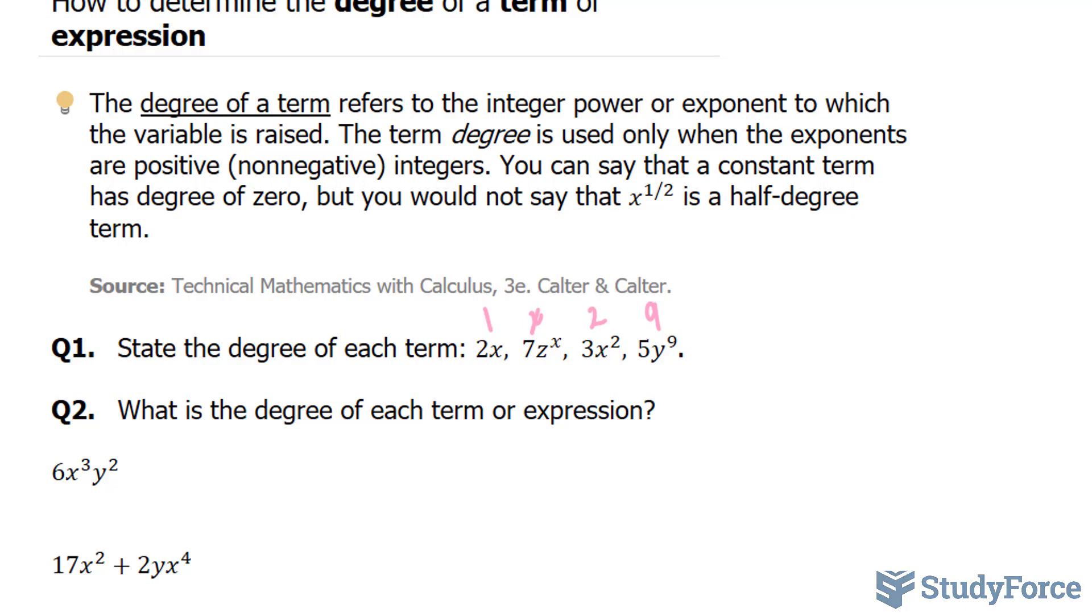To figure this one out, you have to add the degrees. So we have 3 here and we have 2 here. 3 plus 2 is 5. This is a fifth degree term.